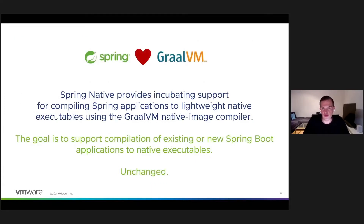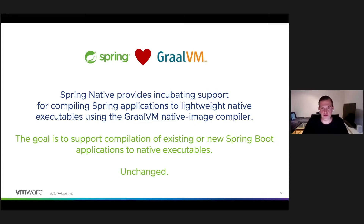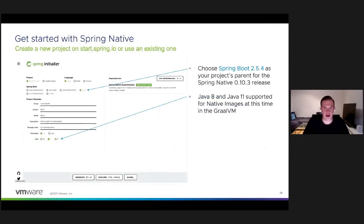The Spring team is working on adding support for compiling Spring Boot applications to native executables using the GraalVM native image compiler with the Spring Native project, which is available as a public beta. The goal is to support compilation of existing or new Spring Boot applications to native executables without any changes — which is not yet the case for the current beta. You can get started with Spring Native very easily by using start.spring.io to create a new project.